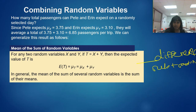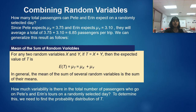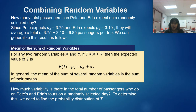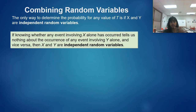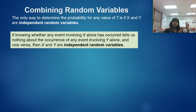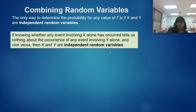Now that we've discovered the mean is 6.85 passengers per trip for both tours combined, how much variability is there in the total number of passengers? We're talking about variance. The only way to determine the probability of T is if X and Y are independent, so we need to understand a new definition of what independent random variables are.